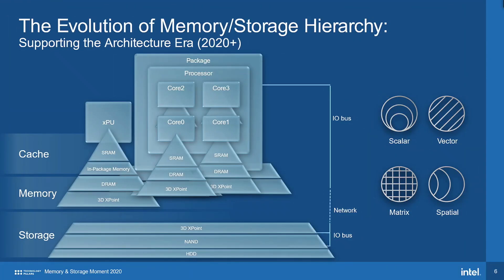I wanted to show how we view the memory and storage hierarchy — we really do view ourselves as the custodians of this hierarchy. What we're doing today with Optane, as both memory and storage, is to keep that hierarchy whole. A good example of how we've fulfilled this custodian role in the past is SSDs themselves — NAND-based SSDs. When we introduced the X25M in 2008, it was because we saw a hole in the hierarchy.